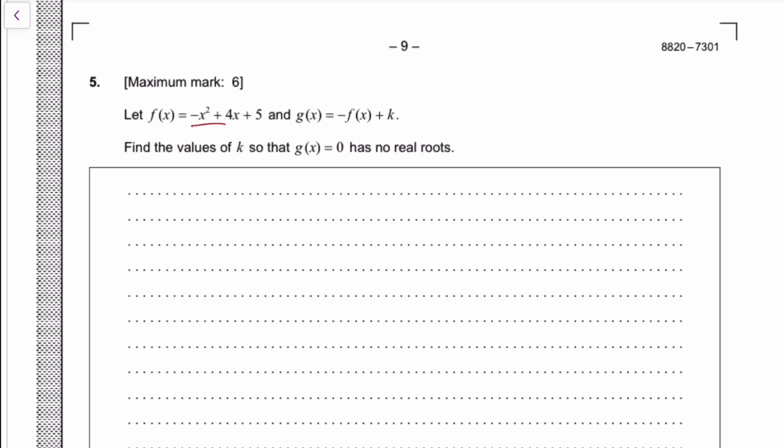You see a quadratic with no real root, so it should already ring the bell of discriminant. To have no real root, the discriminant of a quadratic should be less than 0. Let's make sure gx would eventually be a quadratic, which it should be because gx is just the negative of fx plus k.